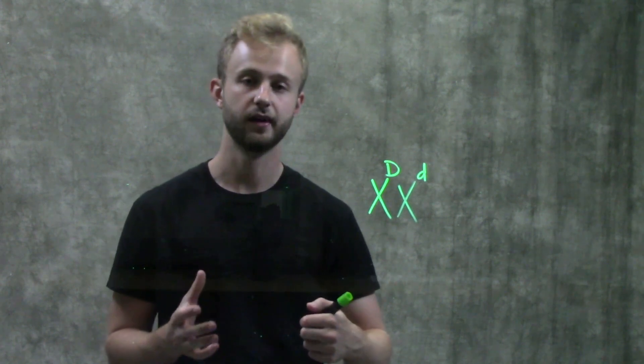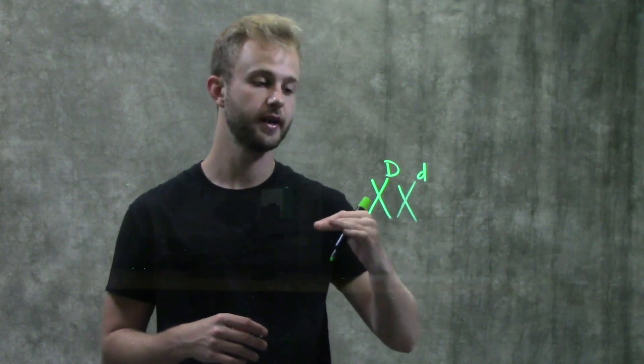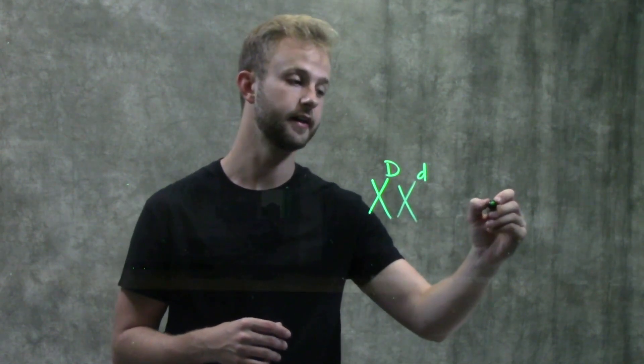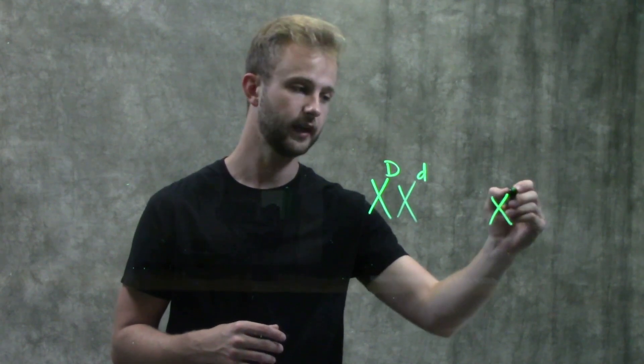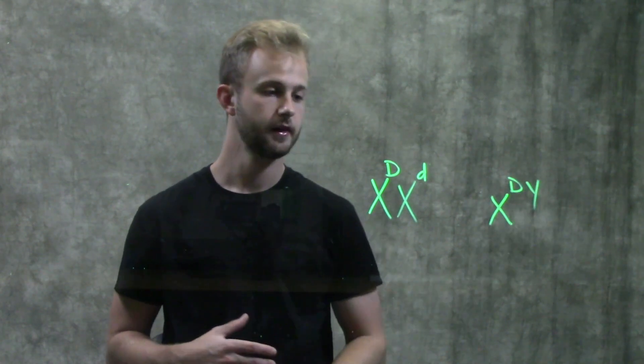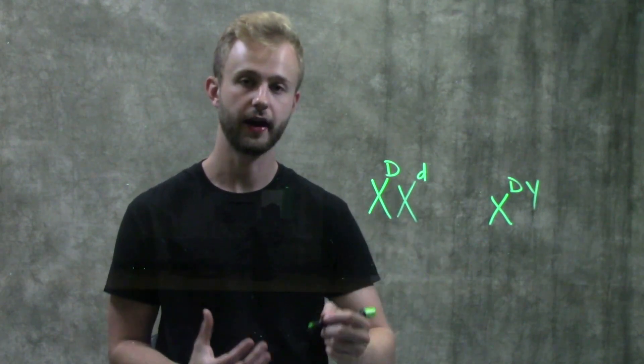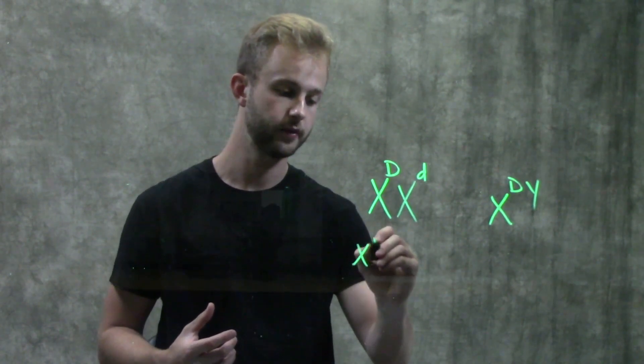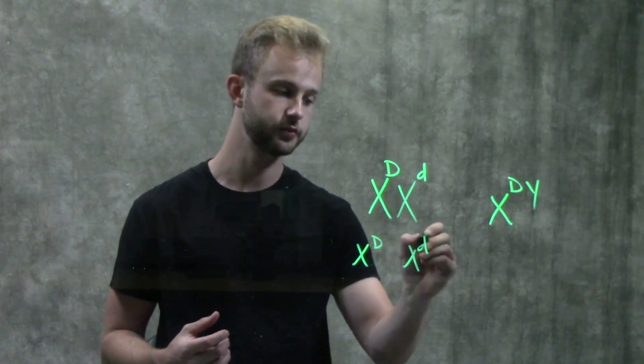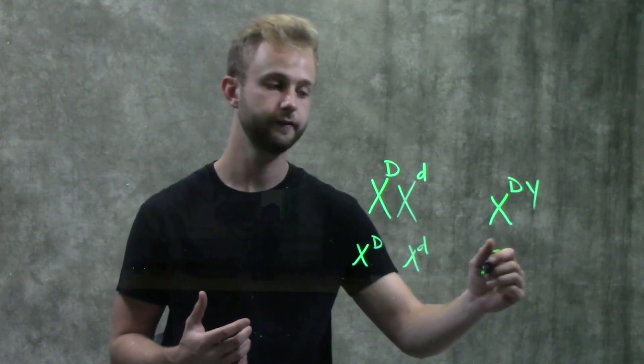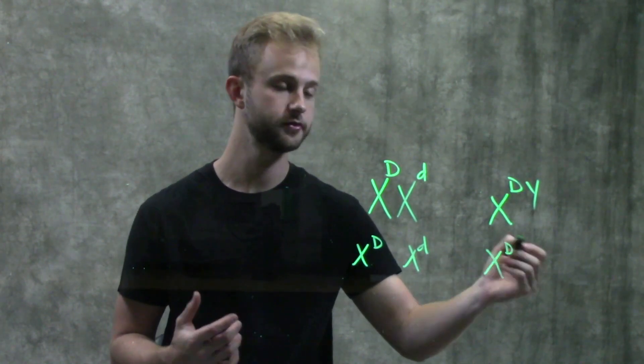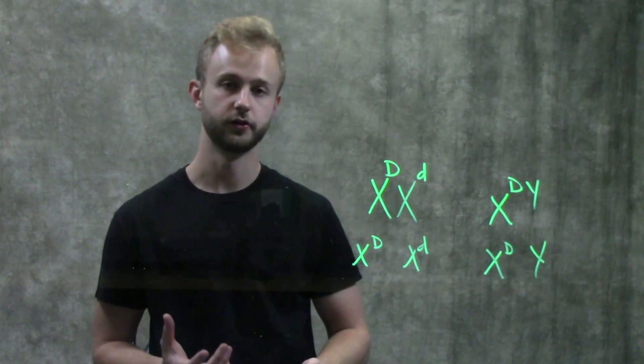So with males, it's a little different. So let's say we have this woman that marries a normal seeing male. And so when these individuals make gametes, the woman, all of her eggs are going to get an X chromosome, but it could be either one of these X chromosomes. And with the man, half of his gametes will get the X chromosome and the other half will get the Y chromosome.